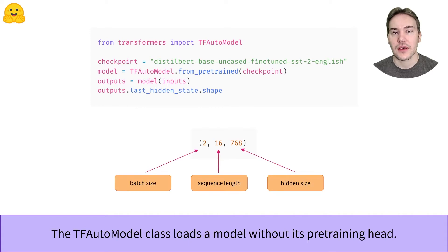It will output a high-dimensional tensor, that is a representation of the sentences passed, but which is not directly useful for our classification problem. Here, the tensor has two sentences, each of 16 tokens, and the last dimension is the hidden size of our model, 768.